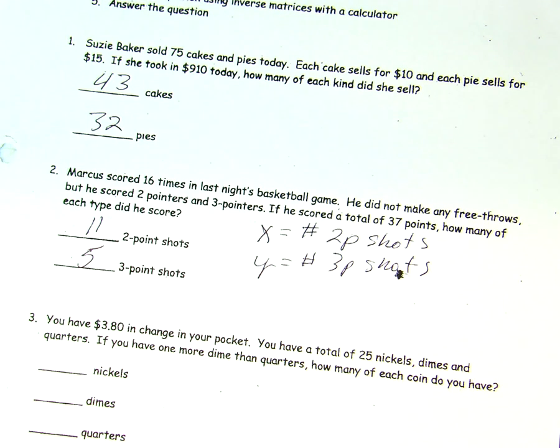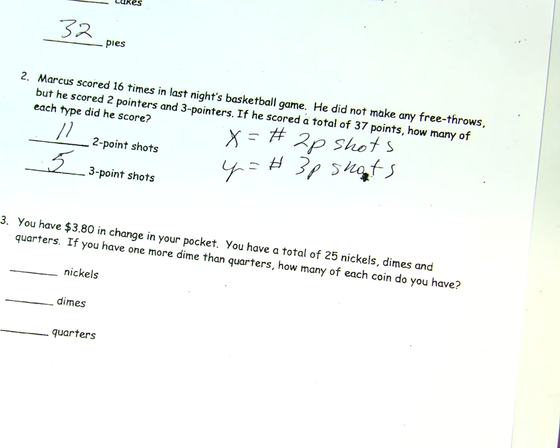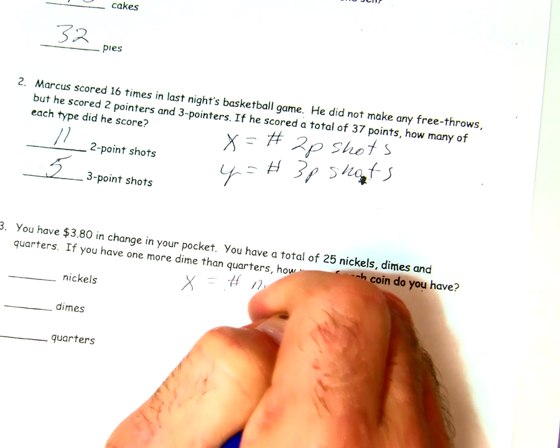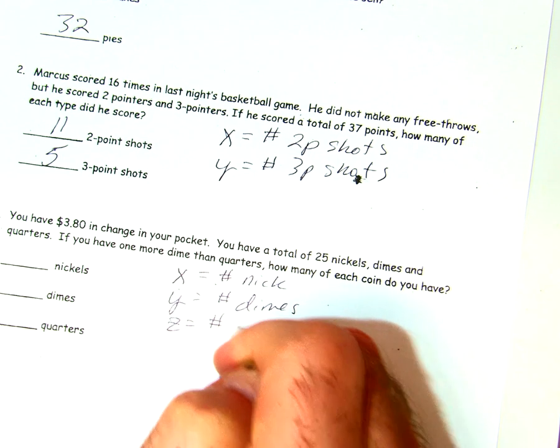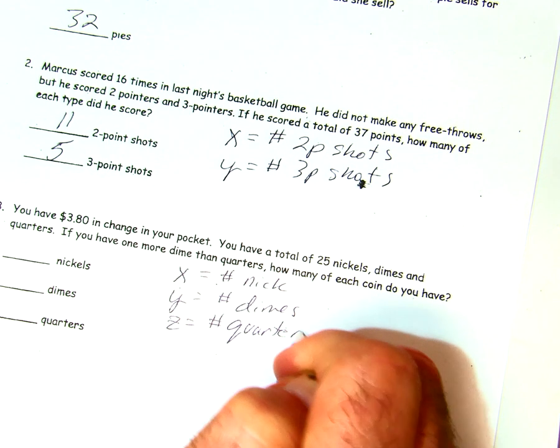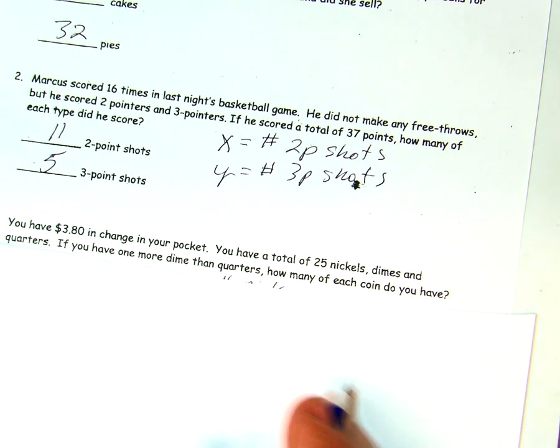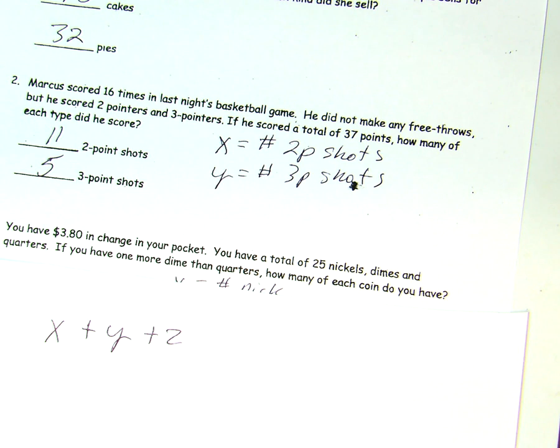Okay, we got one more. Now, this last example is a little more complicated. It requires some thinking. And it's a 3 by 3 matrix. So here we have 380 change in your pocket. And we have nickels, dimes, and quarters. So, we're going to make x equals the number of nickels, y will be the number of dimes, and z equals the number of quarters. So our equation here is going to be x plus y plus z is the total number of coins, which is 25.